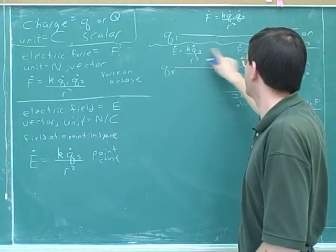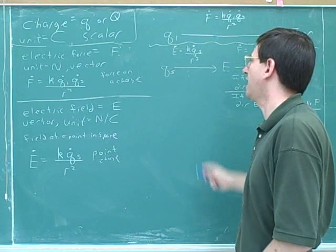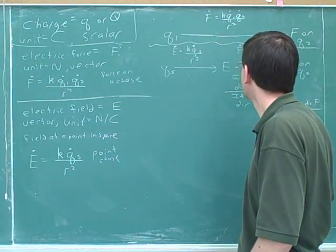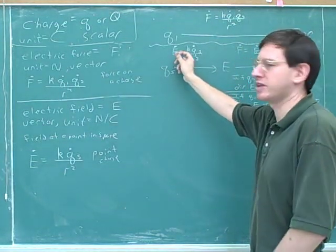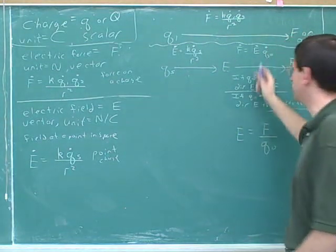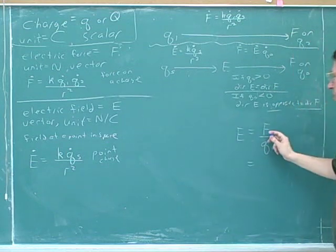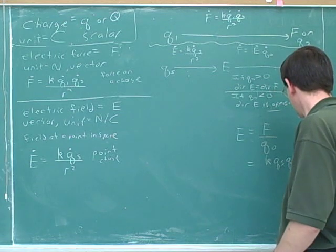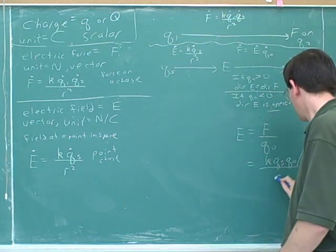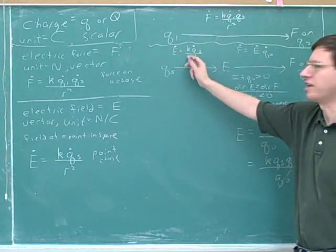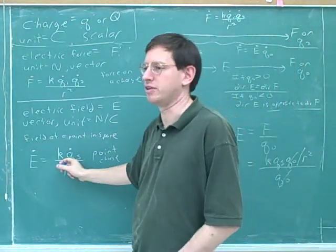Unfortunately, in the textbook, they oftentimes leave out these subscripts. It's better whenever you see a formula to ask whether it deals with the source charge or the test charge. This formula should be easy to prove: the electric field is the force over the test charge. The force comes from Coulomb's law. When you plug in Coulomb's law for the electric force, the q-naughts cancel, and you're left with this formula. So this formula is really Coulomb's law for the electric field.